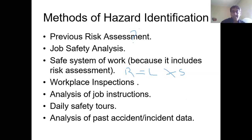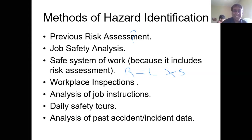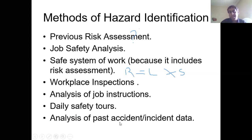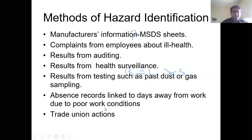Methods of identifying hazards include: previous risk assessments, job safety analysis, safe systems of work, workplace inspections, analysis of job instructions, daily safety tours, past accidents and incident data. There are also simpler ones like inspection and tour, MSDS sheets, and audits. These are all ways of identifying hazards.